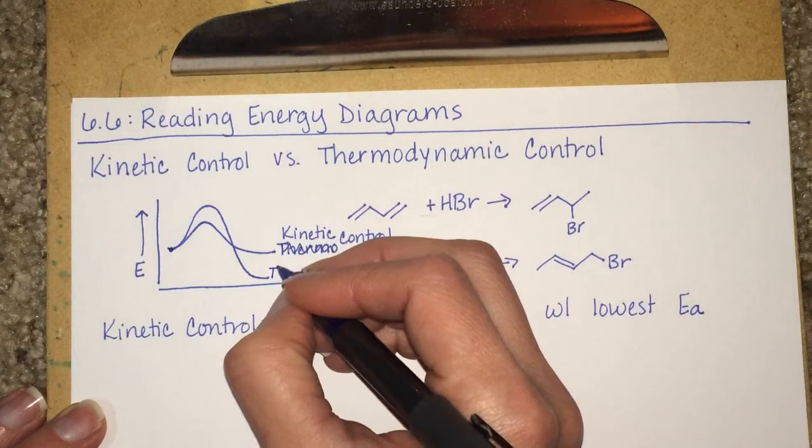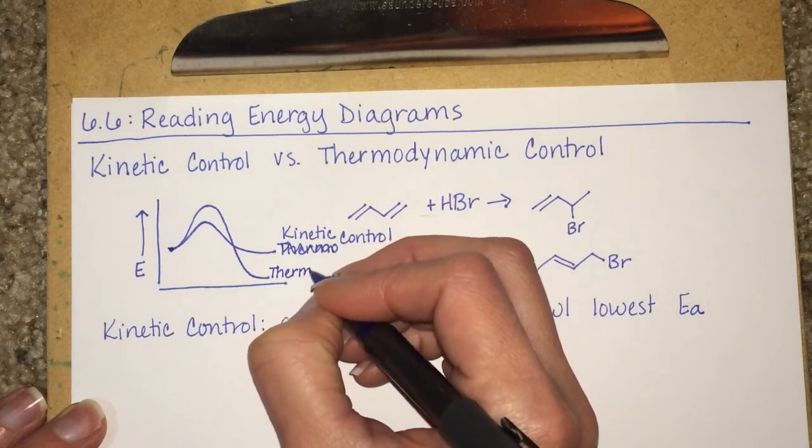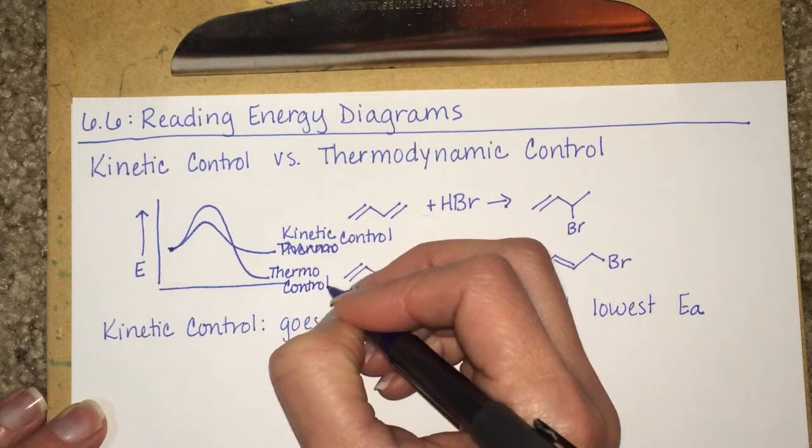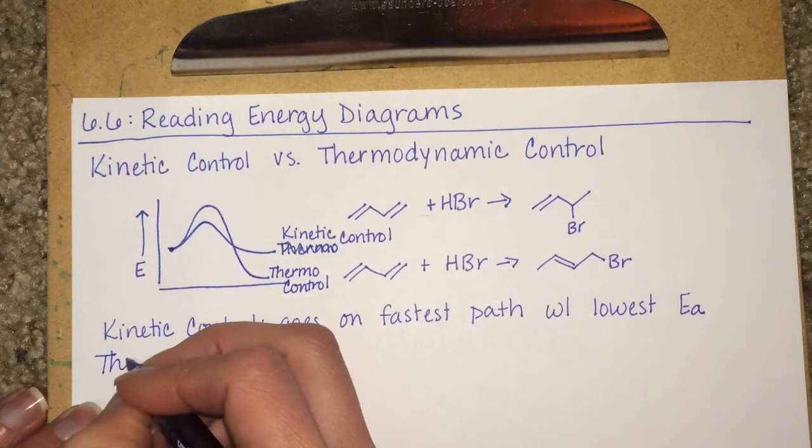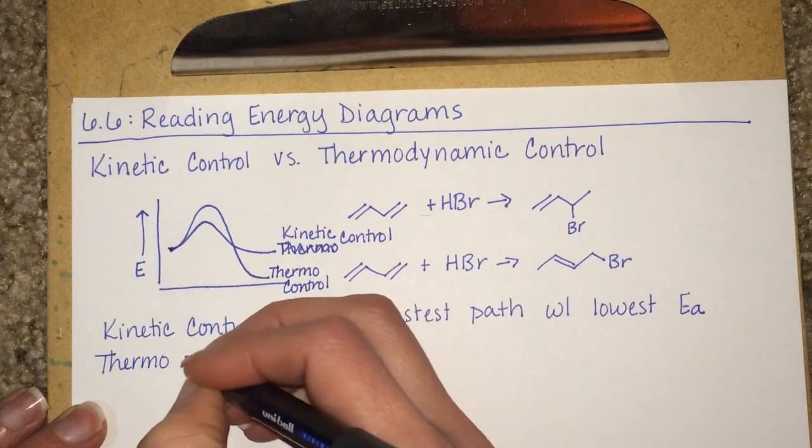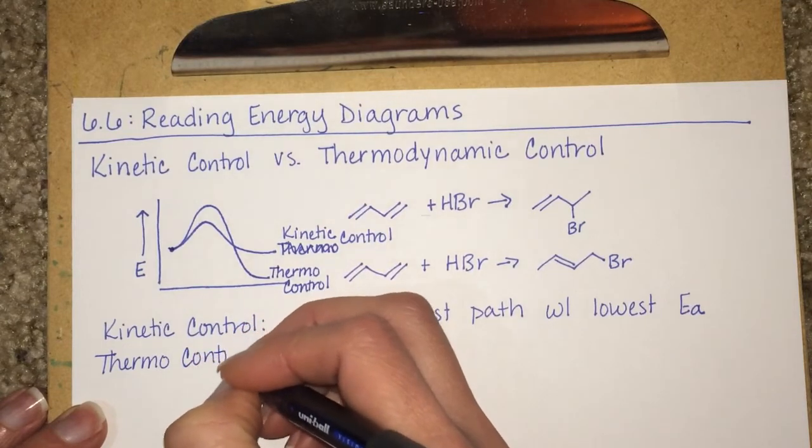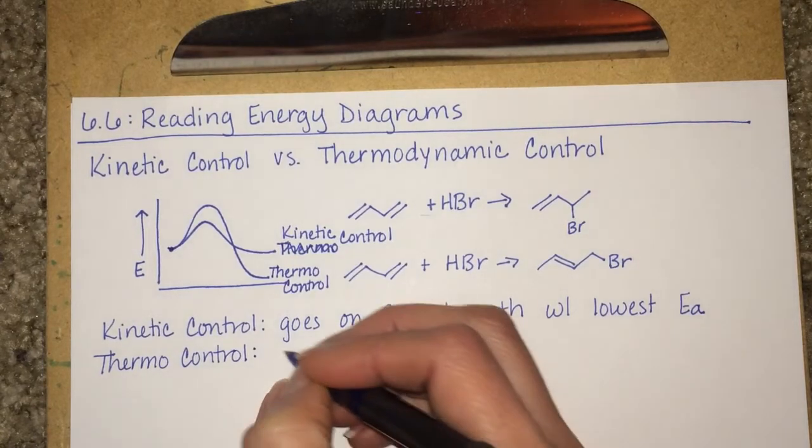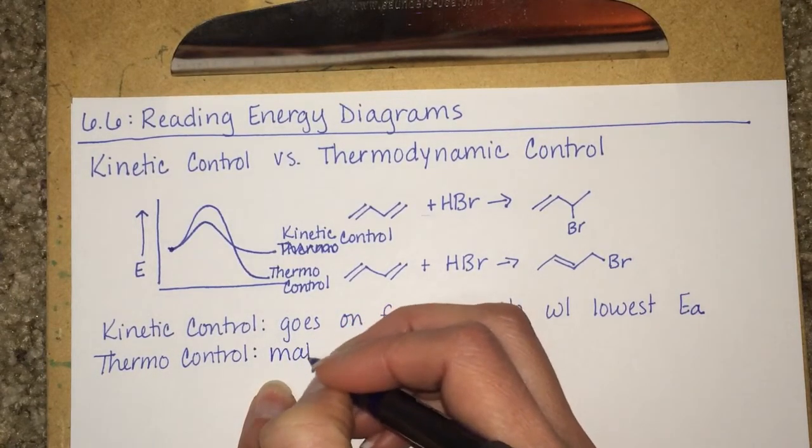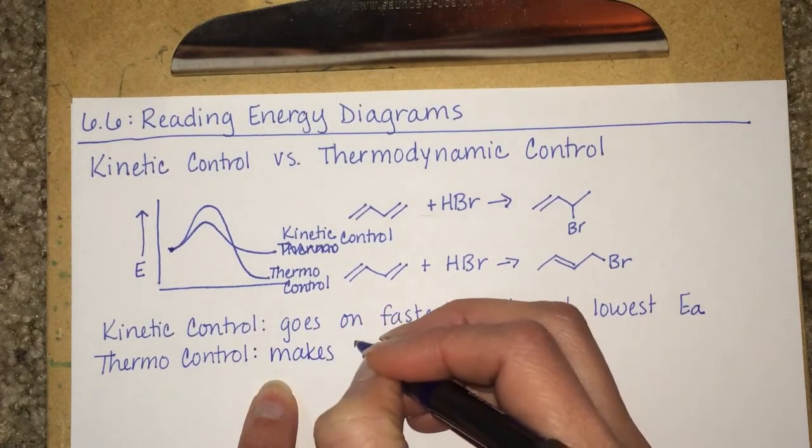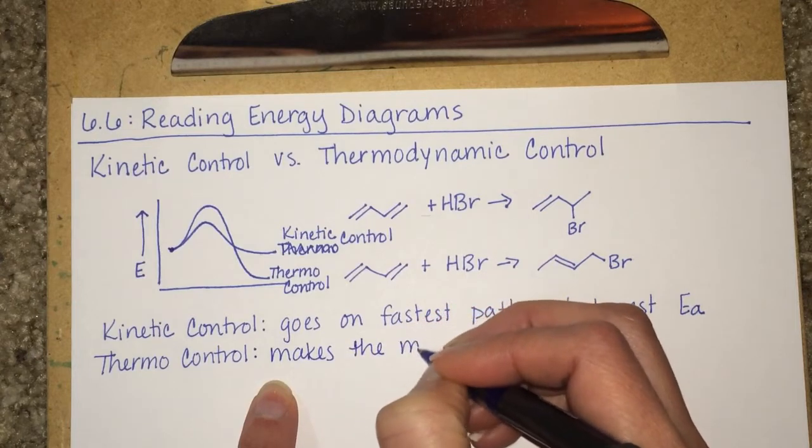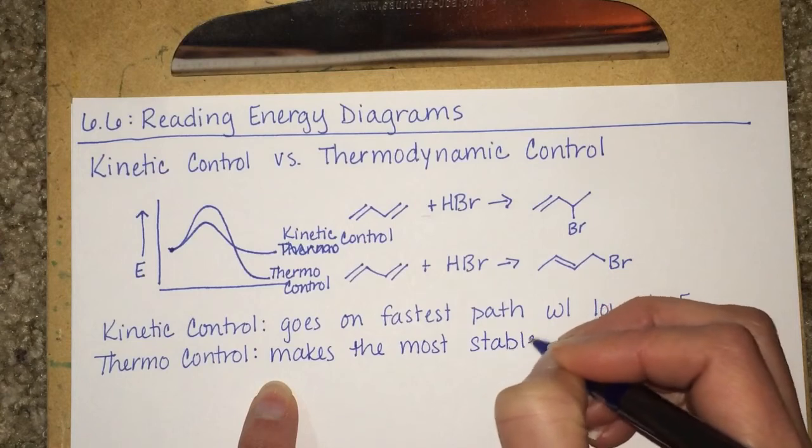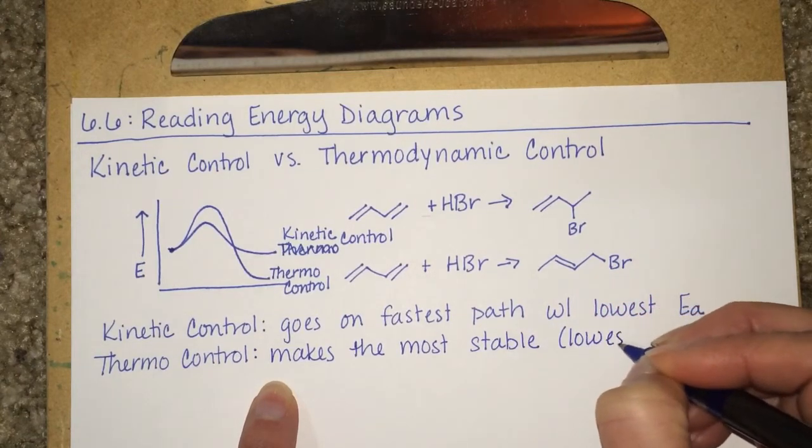The other pathway is said to be under thermocontrol or thermodynamic control. The reaction that's under thermocontrol is the one that makes the most stable products, which are the lowest energy products.